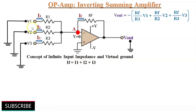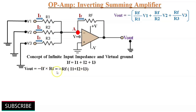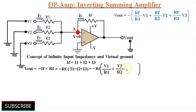When all 3 inputs are applied, the output voltage Vout is equal to minus IF multiplied by RF, which equals minus RF multiplied by I1 plus I2 plus I3. We can write I1 as V1/R1, I2 as V2/R2, and I3 as V3/R3. If all 3 input resistors R1, R2, R3 are of the same value, let's say R, we can simplify this equation.